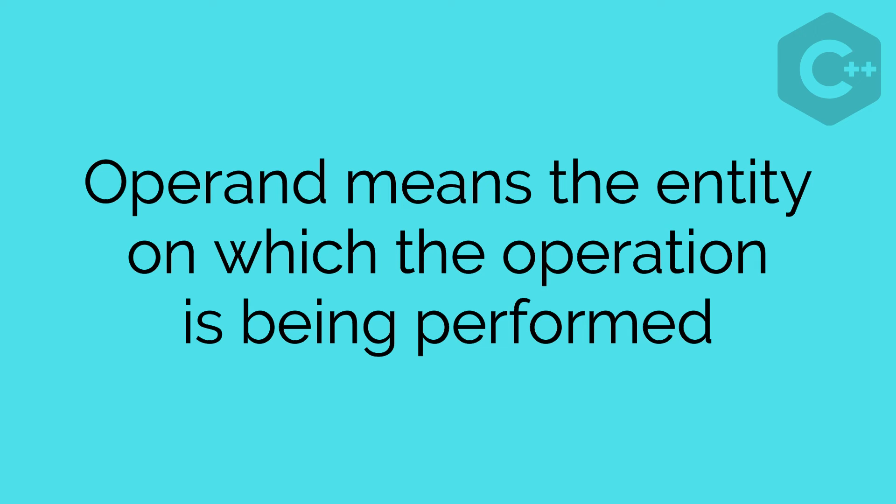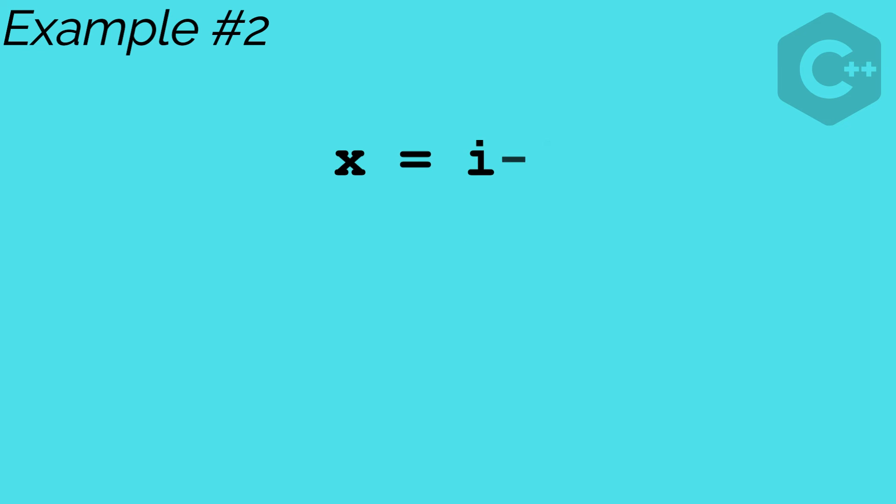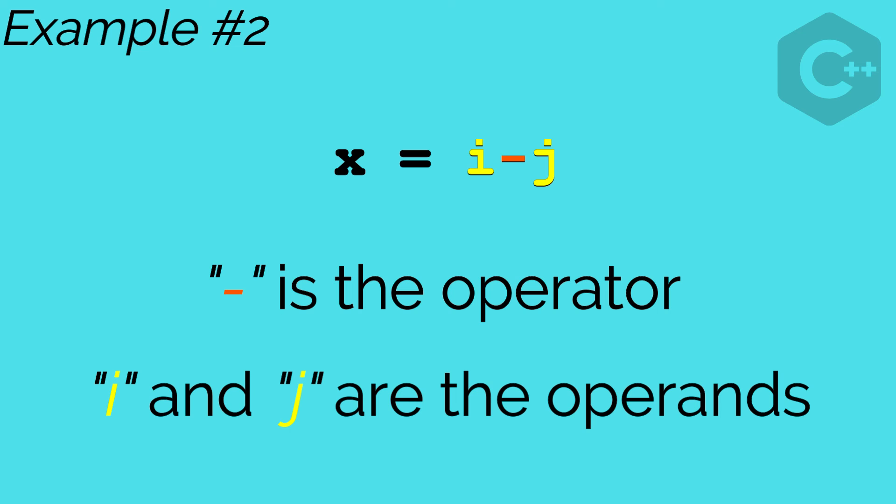Let's take one more example. If I say x is equal to i minus j, then here minus is the operator and i and j are the operands.